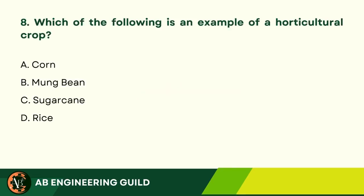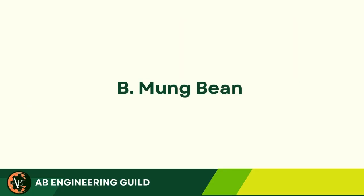Question 8. Which of the following is an example of a horticultural crop? A. Corn. B. Mung bean. C. Sugarcane. D. Rice. Answer: B. Mung bean.